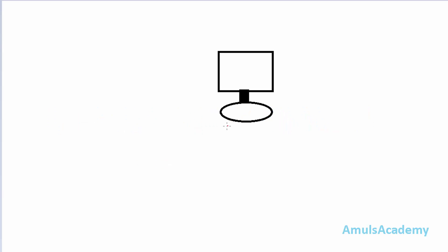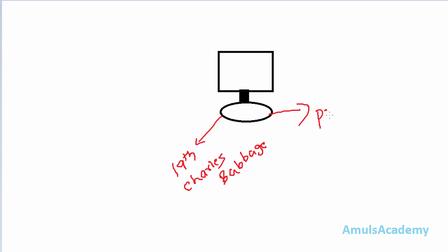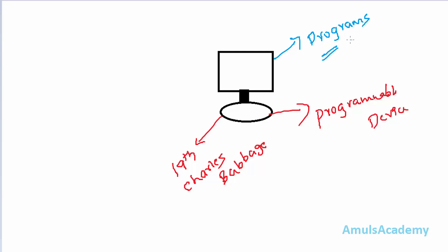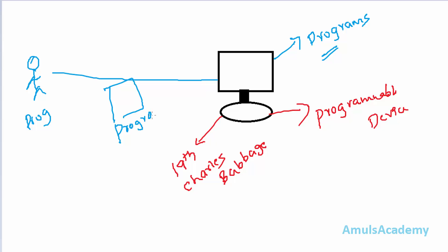Nowadays computers have become an essential part of our life. In every field we use computers. This computer was introduced in the 19th century by Charles Babbage and is called a computational device or a programmable device. A computer can't do anything without programs, and a program is nothing but a set of instructions.